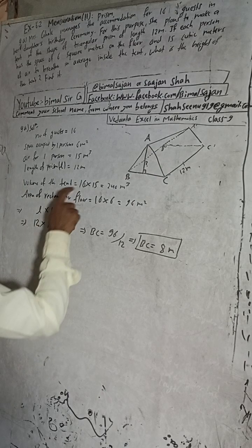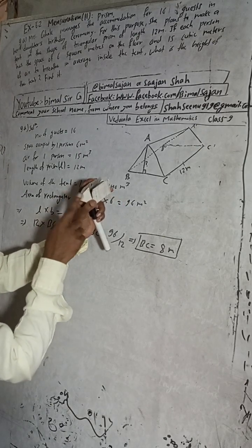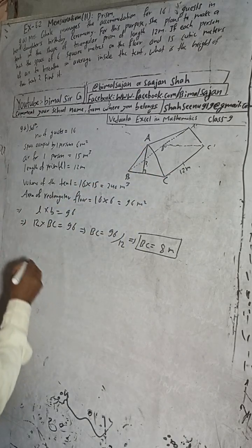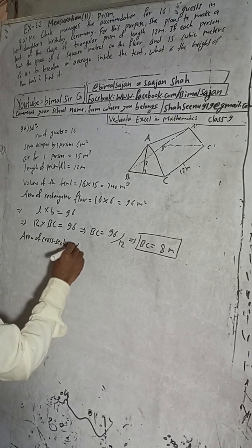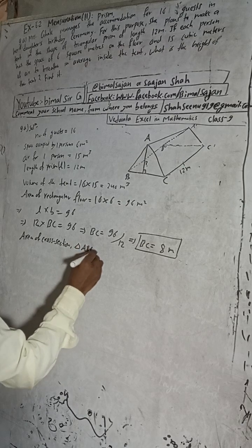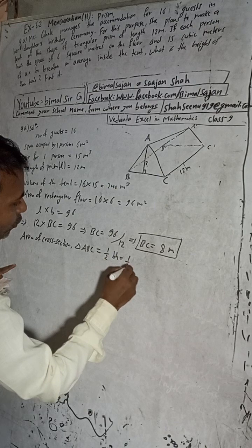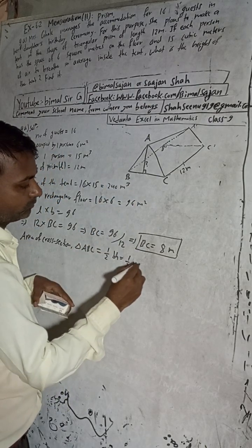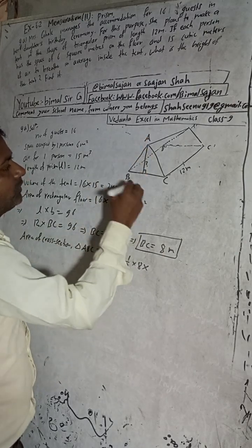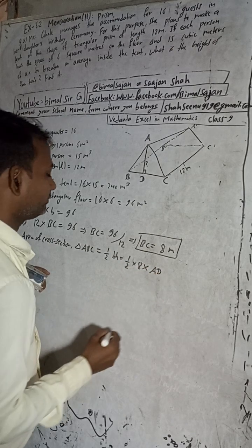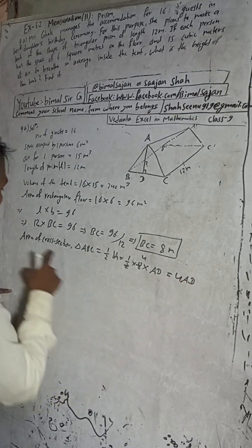Now we have the value of BC. Next, we find the area of the cross-section, which is triangle ABC. Area of triangle ABC = ½ × base × height = ½ × BC × AD = ½ × 8 × AD = 4·AD. So the area of the cross-section is 4·AD.